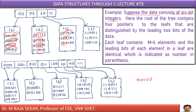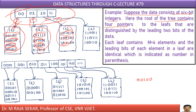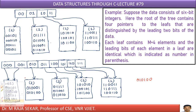Here, the root of the tree contains four pointers to the leaves. This is the root with pointer 1, pointer 2, pointer 3, pointer 4 — pointing to leaf 1, leaf 2, leaf 3, leaf 4.